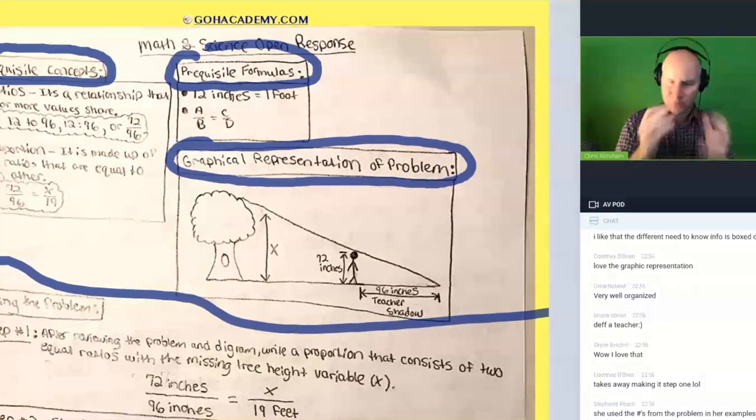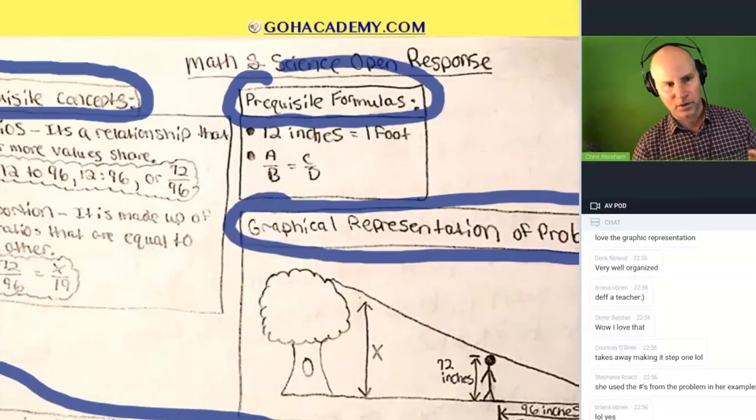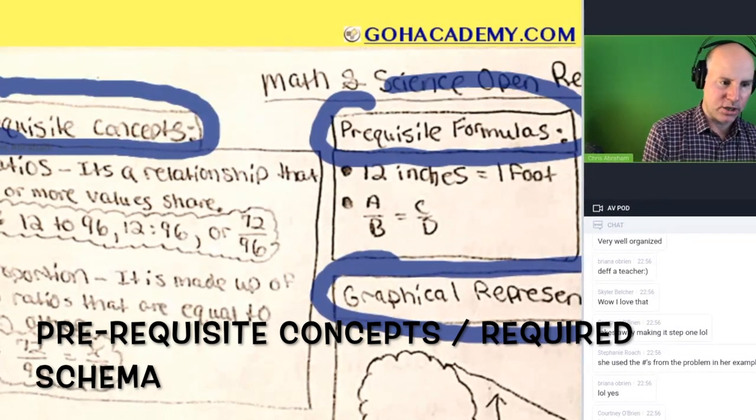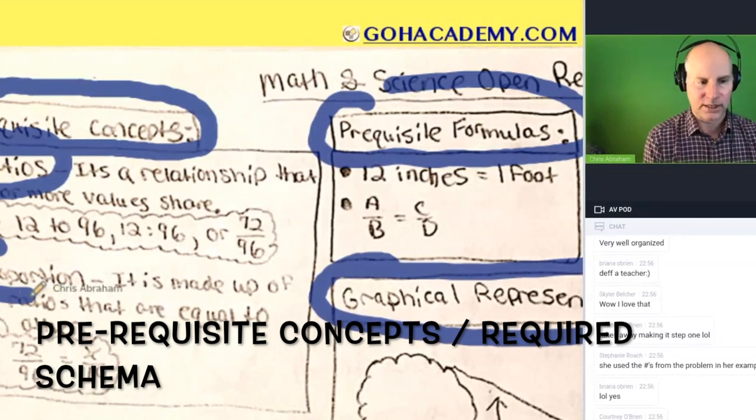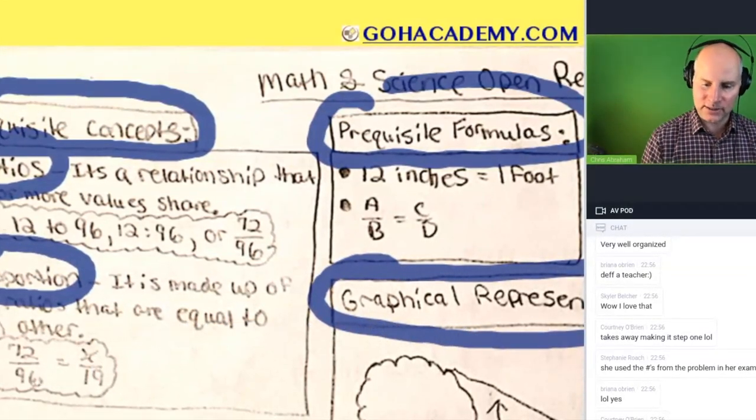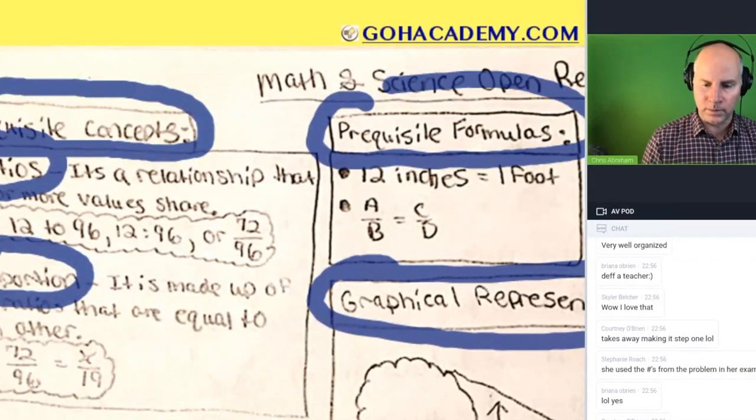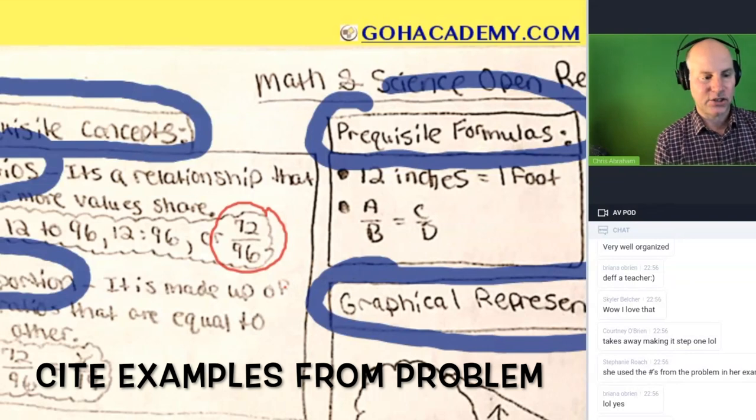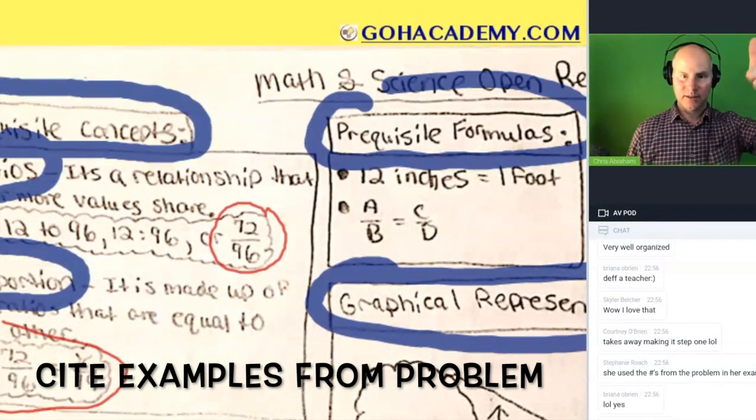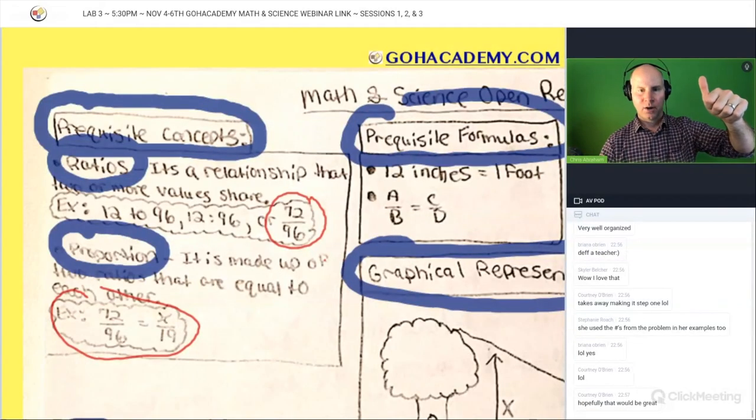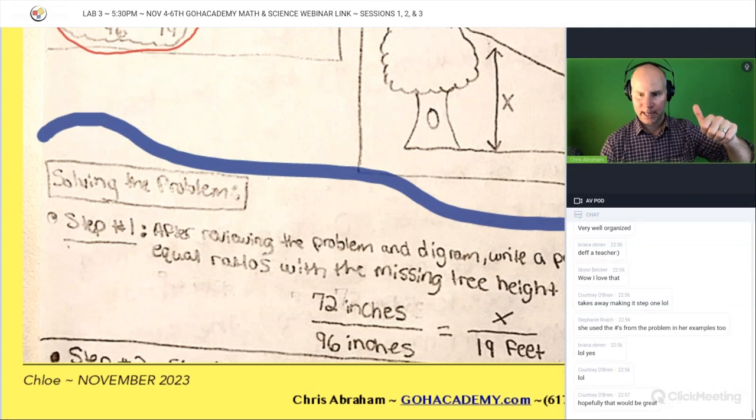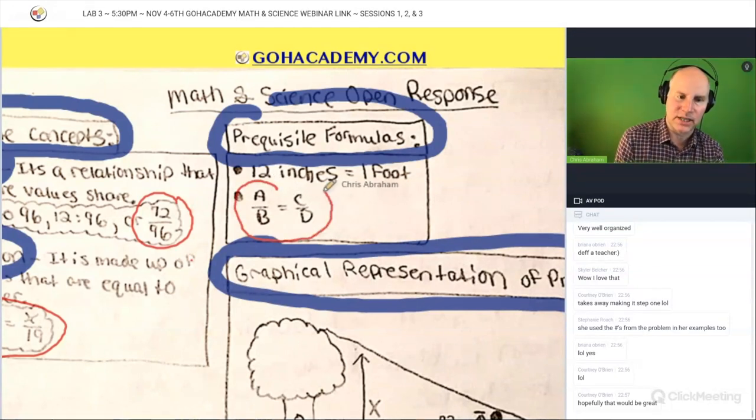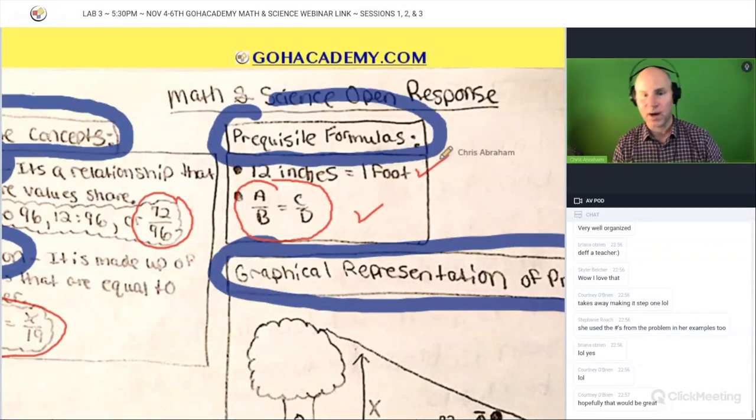Let's just zoom in a little bit and just look at each one. Under prerequisite concepts we have a definition of ratios and a definition of proportions. Very good, I love it. Chloe cites ratios that are actually used in the problem and a proportion that's used in the problem. Do you see how that works? Or how about this one, prerequisite concepts with formulas. This is a formula here: a over b is equal to c over d, and inches into feet. That's important too.